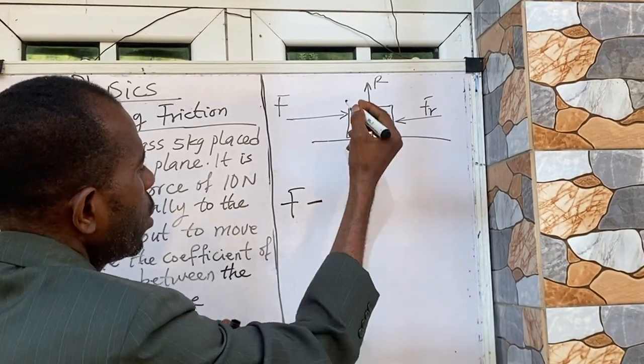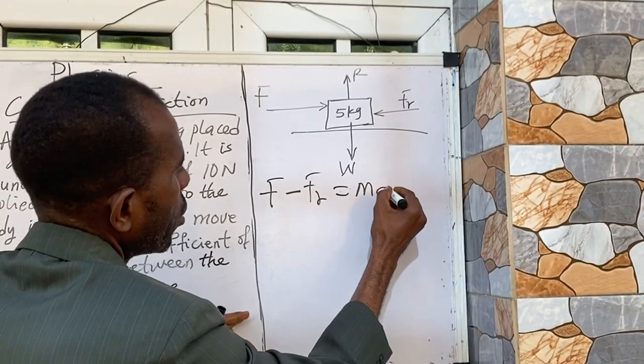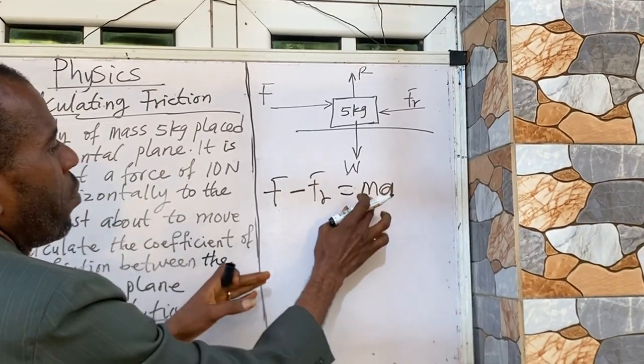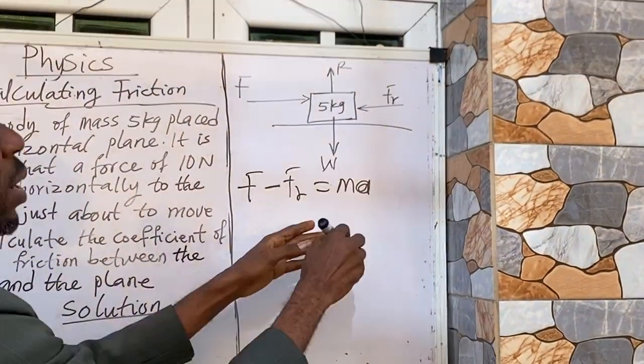F minus Fr equal to mass times acceleration. That is when the body is just about to move.